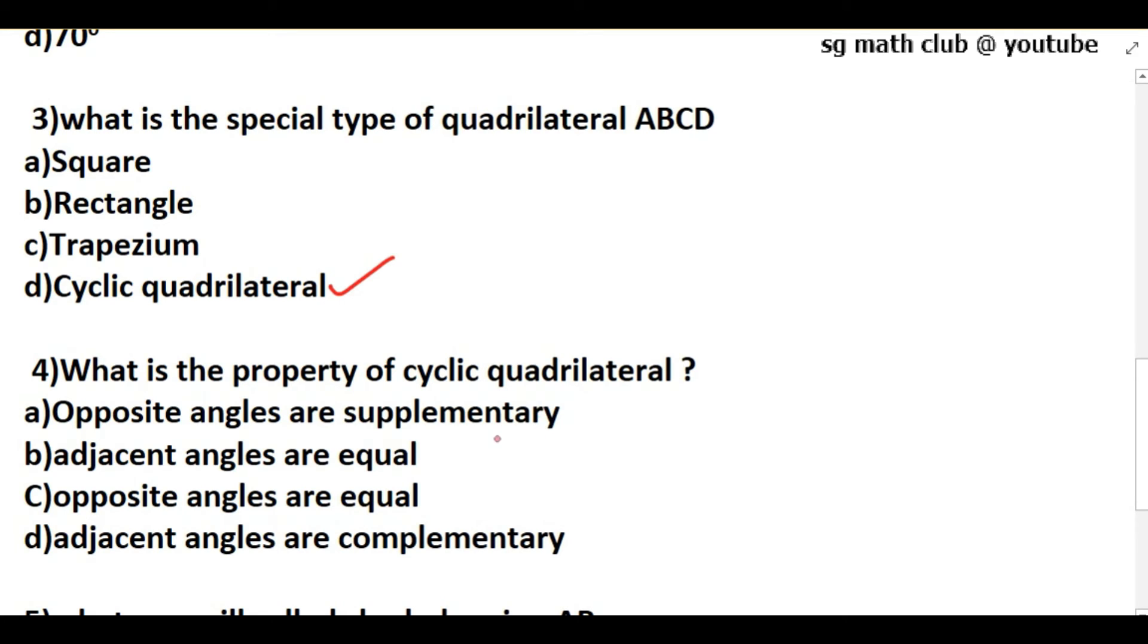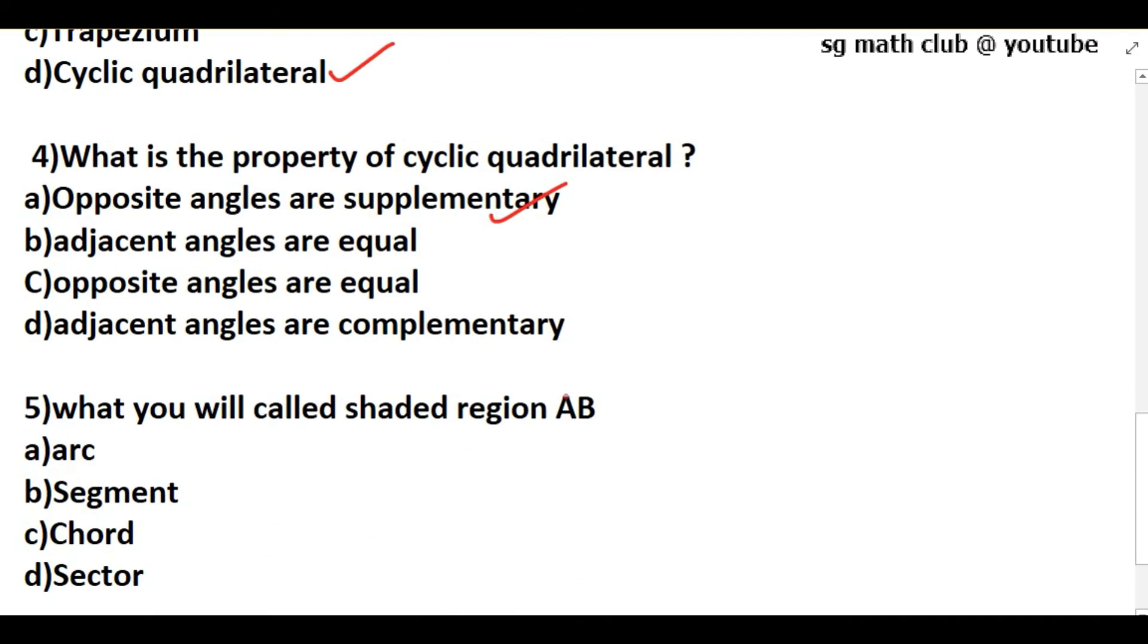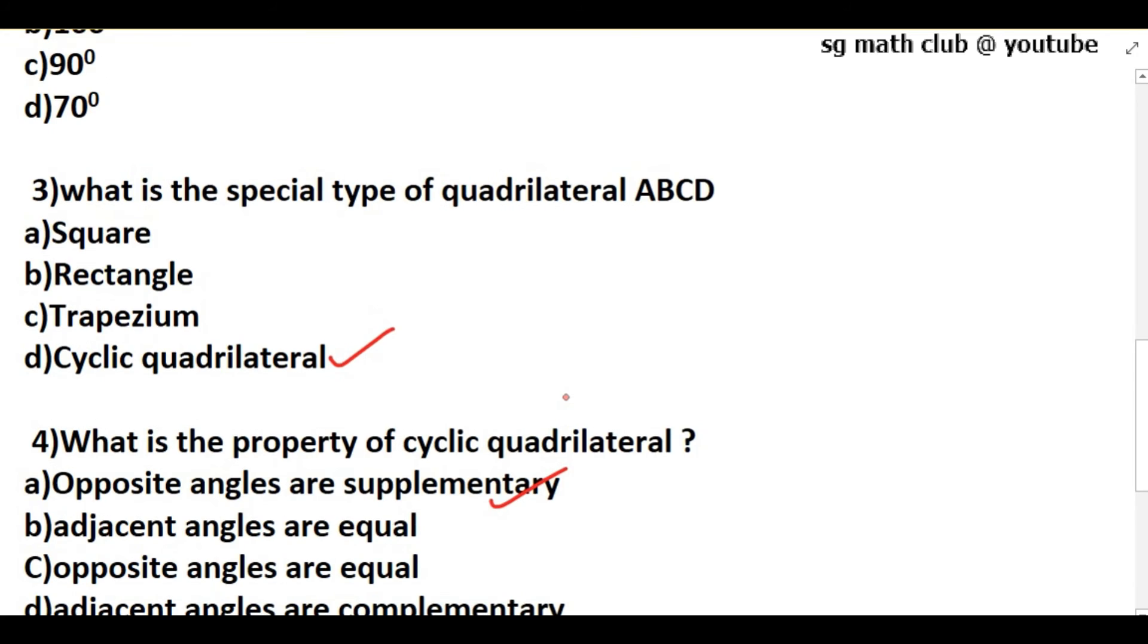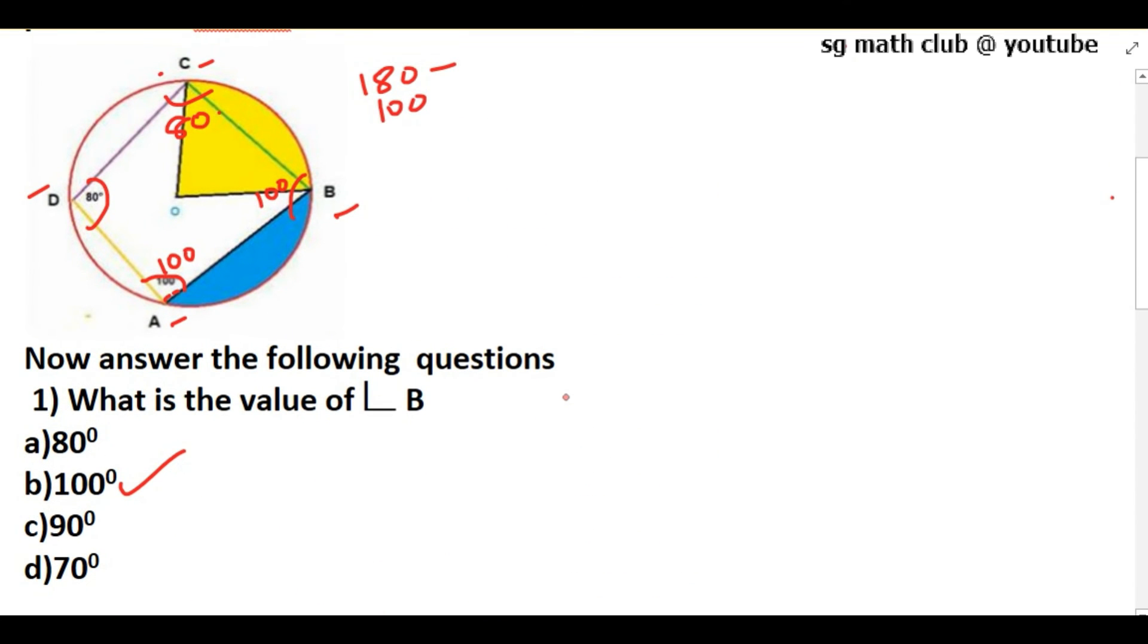What will you call the shaded region AB? This shaded region is called a segment, and this other shaded region is called a sector. A segment is the region enclosed between a chord and an arc of the circle. A chord is the line segment joining any two points on the circle.